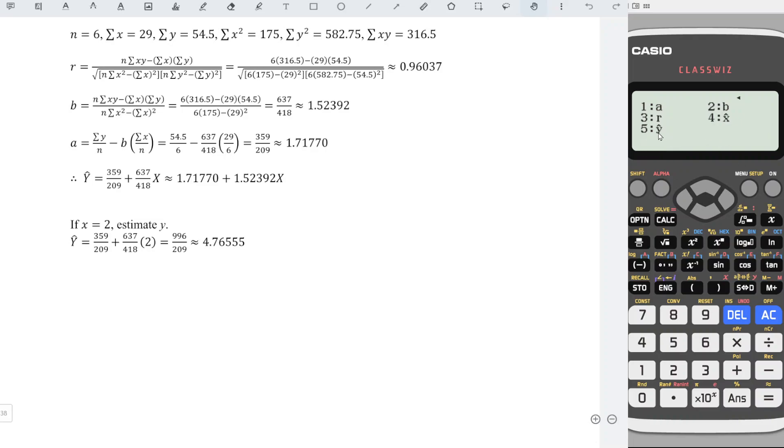And we choose 5 since we are going to estimate y. So we should have y hat. Hat stands for estimate. And we press x equal. Then we should obtain the estimated y.